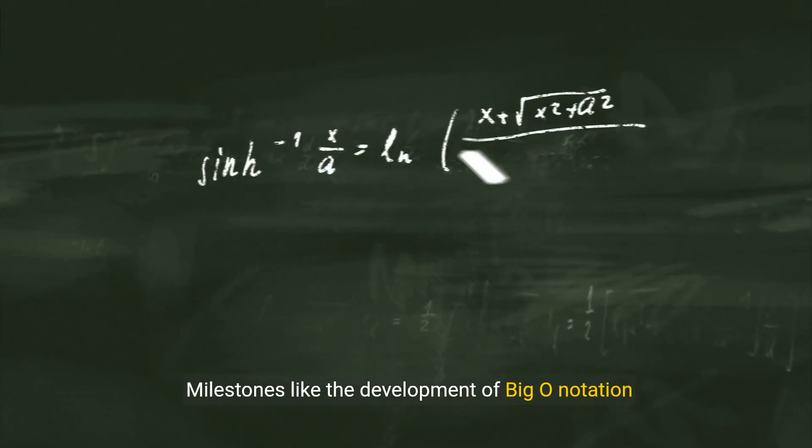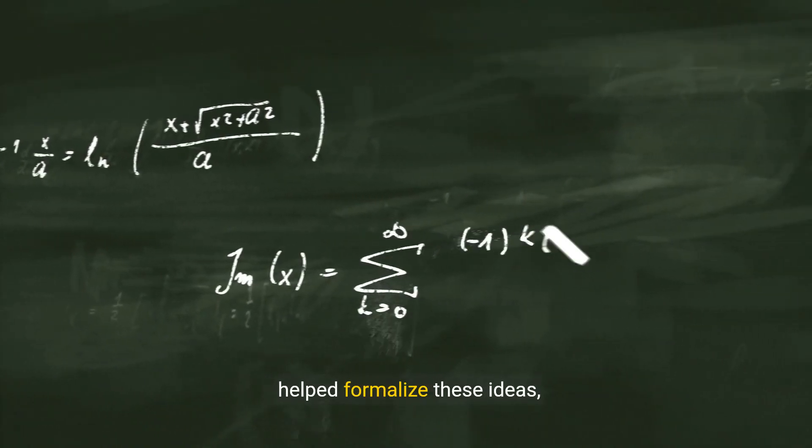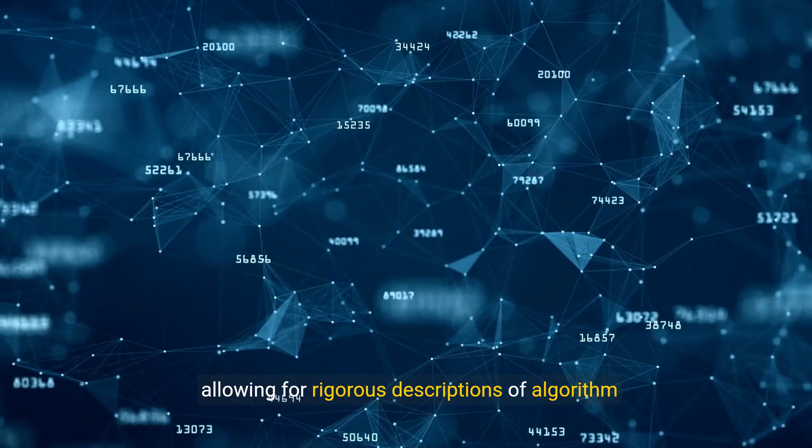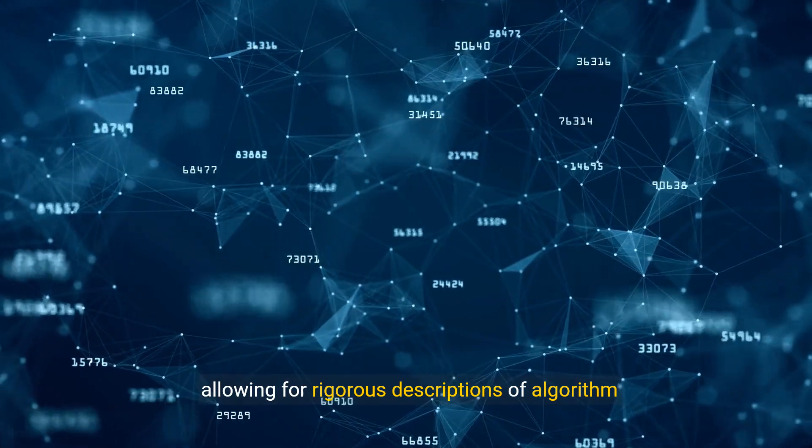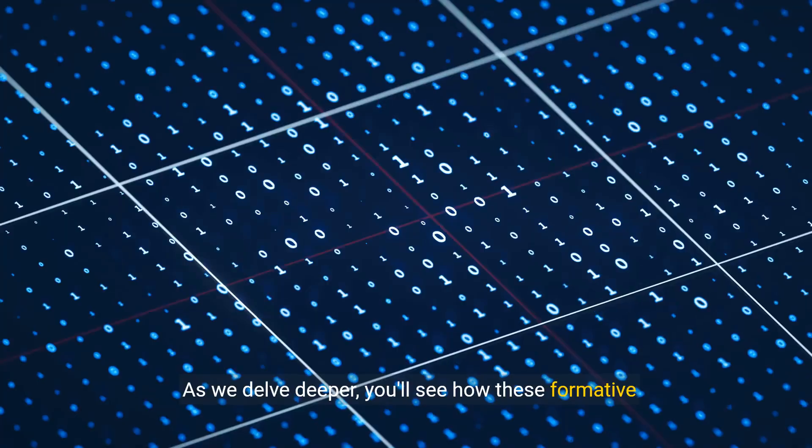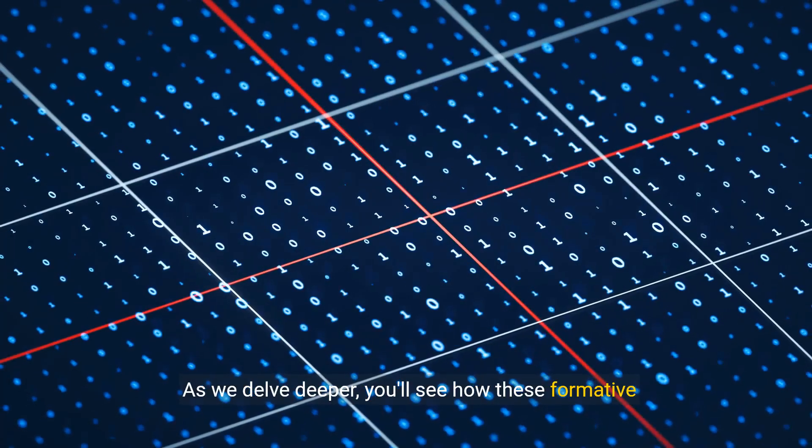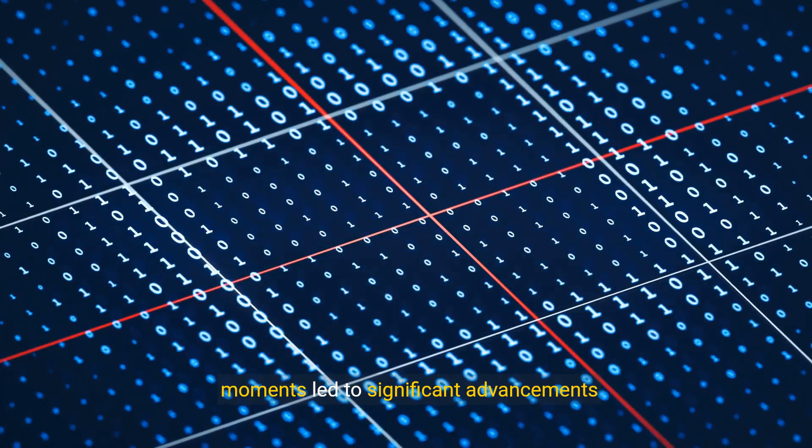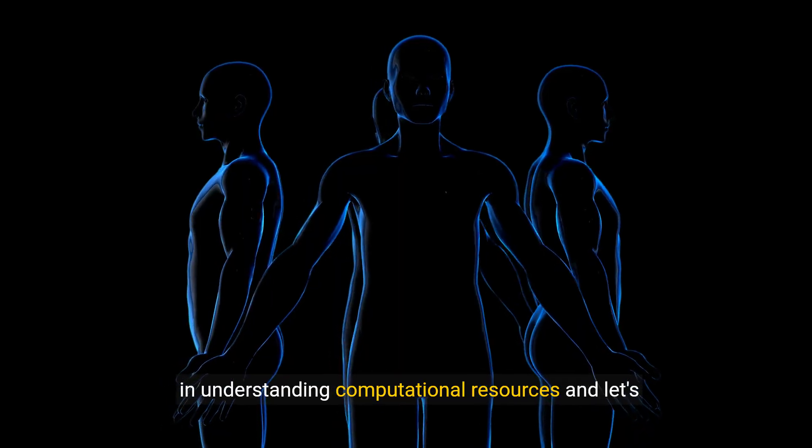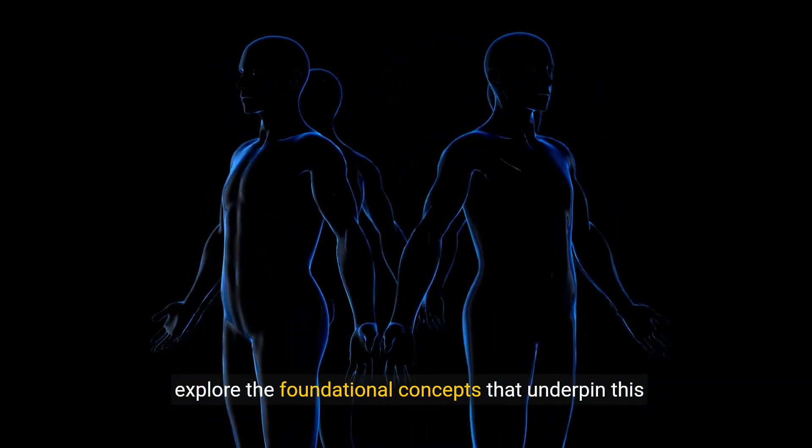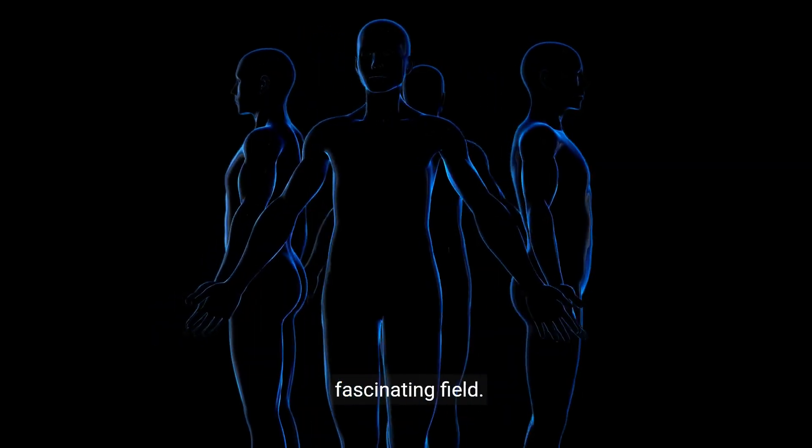Milestones like the development of Big O notation helped formalize these ideas, allowing for rigorous descriptions of algorithm efficiency. As we delve deeper, you'll see how these formative moments led to significant advancements in understanding computational resources, and let's explore the foundational concepts that underpin this fascinating field.